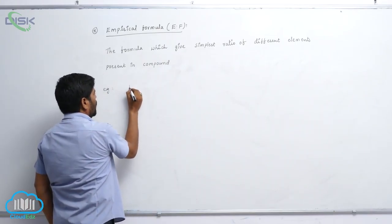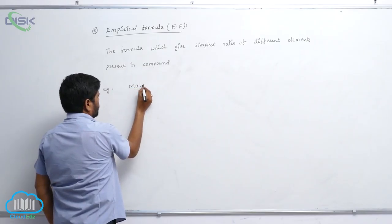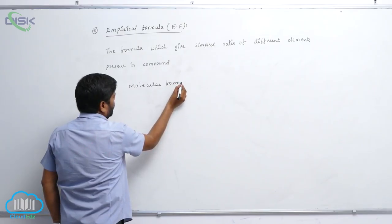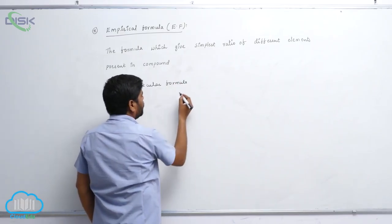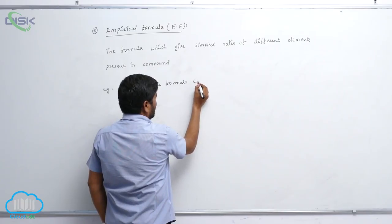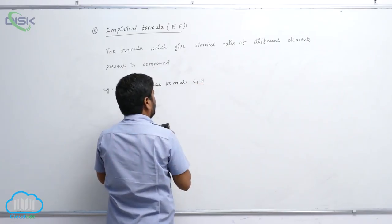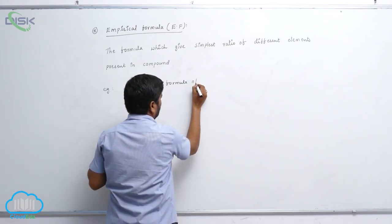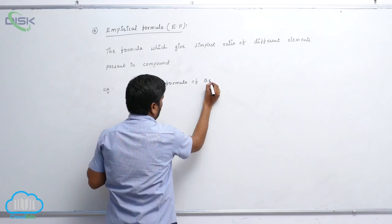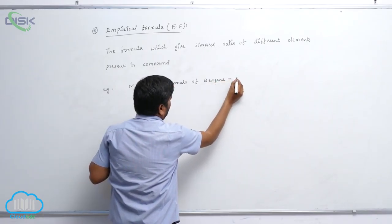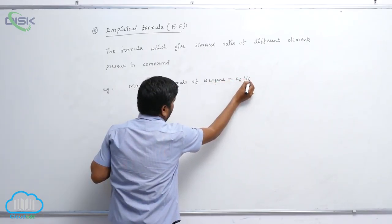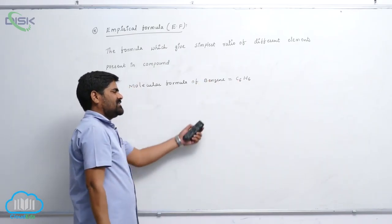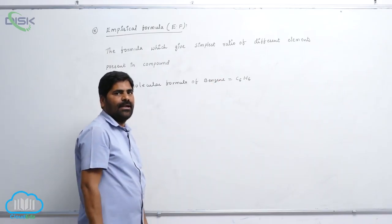Example: molecular formula of benzene is C6H6. So here there are 6 carbon atoms and 6 hydrogen atoms.